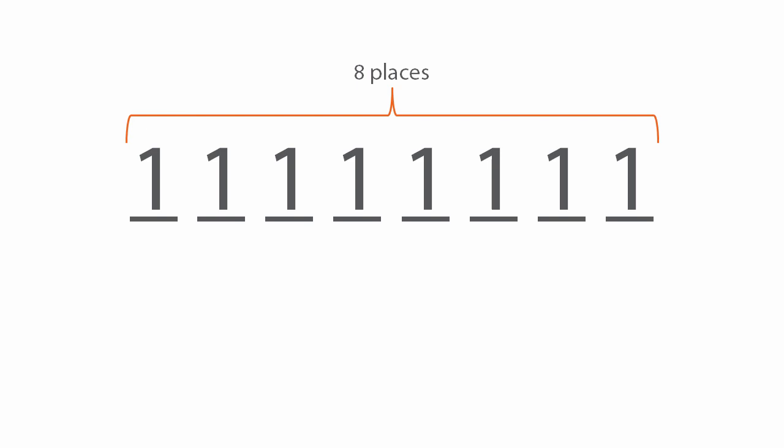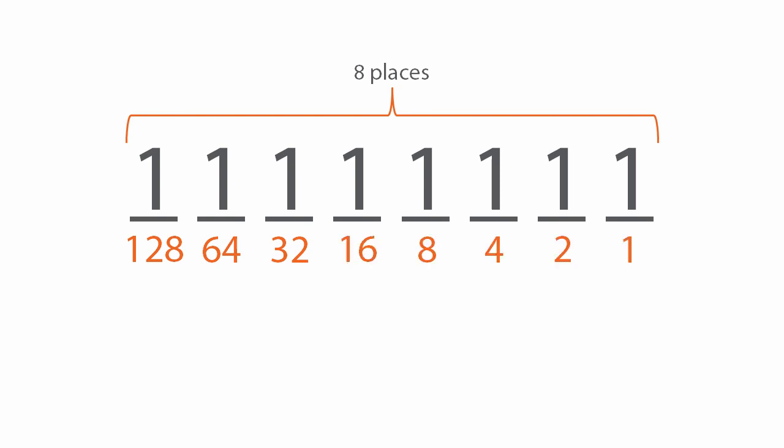What about the number 128? The leftmost place has a place value of 128 — a 1 in this place equals 128 in decimal. For every bit you move to the right, the place value is exactly half of the one directly to the left. So the next one is 64, then 32. Based on this pattern, the values moving right are: 16, then 8, then 4, 2, and finally 1.